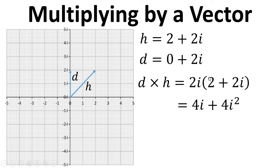So 2i times 2 is 4i, and 2i times 2i is 4i squared. Now i squared is minus 1, so we need to multiply the 4 by the minus 1, and overall we get minus 4 plus 4i.